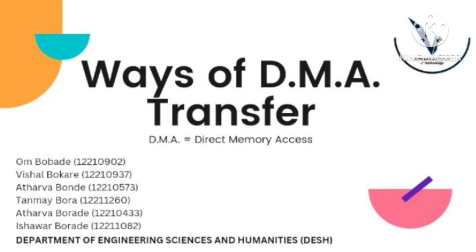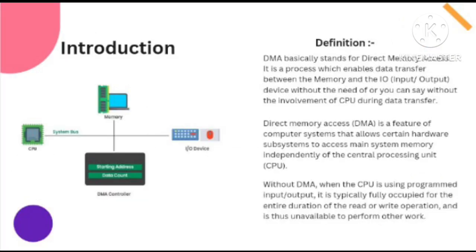Now that we have seen the full form of DMA, let's understand its definition. On this page here, you can see a simple sketch connecting the memory and DMA controller. DMA is a process which enables data transfer between the memory and the input-output device without the involvement of CPU during the data transfer. It's a feature of a computer system that allows certain hardware subsystems to access main system memory independently of the central processing unit, that is the CPU.